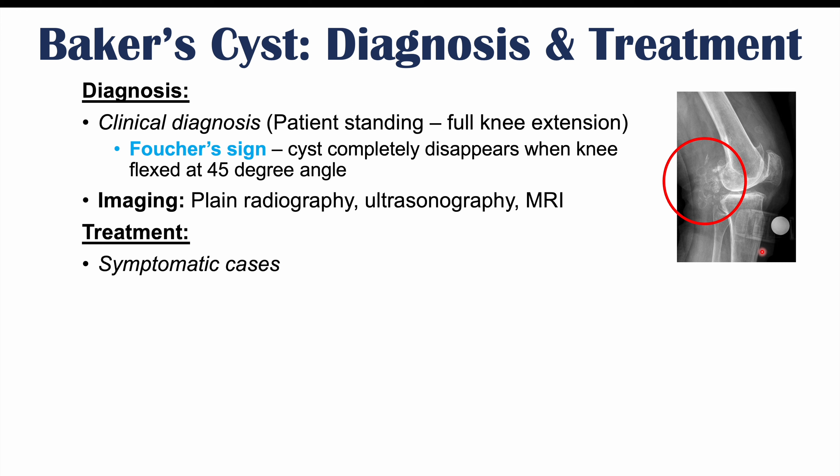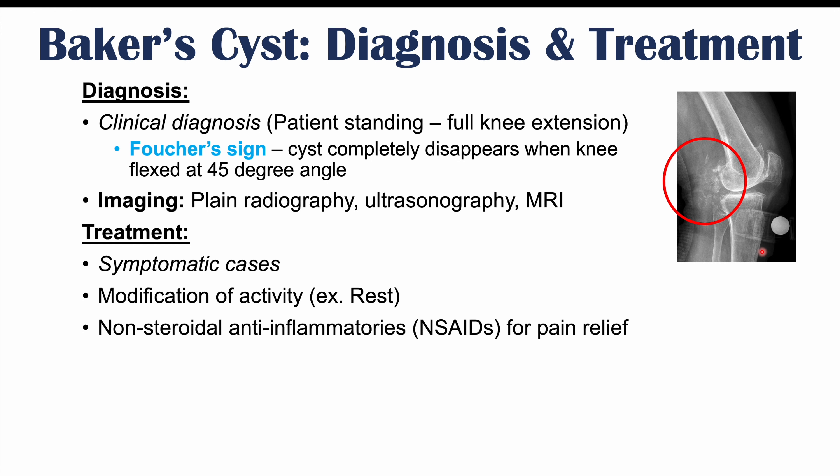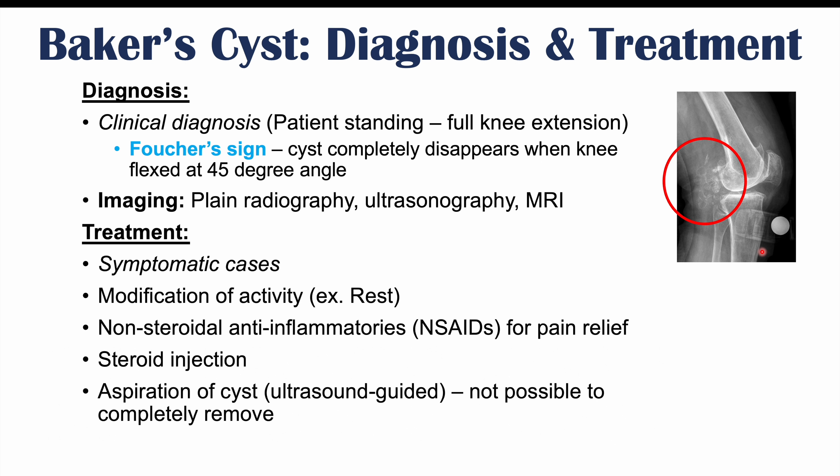Once the clinician diagnoses the condition, how is it treated? Because it is often asymptomatic, it may not be treated extensively. If symptomatic, treatment is more likely. Oftentimes this involves modification of activity — if a physical activity is exacerbating an underlying knee injury, rest and reduced activity may help reduce the size of the cyst. NSAIDs such as ibuprofen may be used for pain relief.